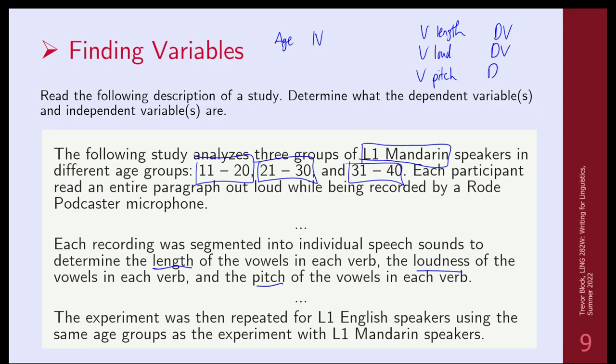The experiment was then repeated for L1 English speakers. So we're actually taking their L1 as an independent variable, because we're essentially manipulating whether they're in the L1 Mandarin group or L1 English group. That gives us two independent variables — age and L1 background — which are the things we're controlling for. And then length, loudness, and pitch of the vowel are things we're measuring: those are dependent variables.